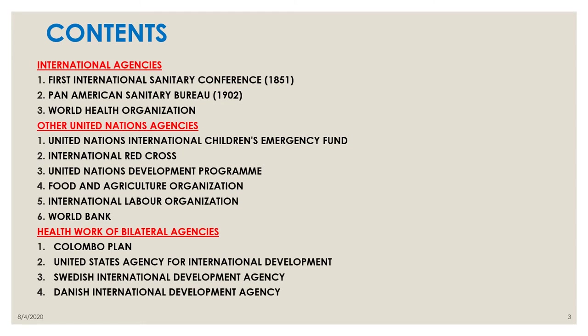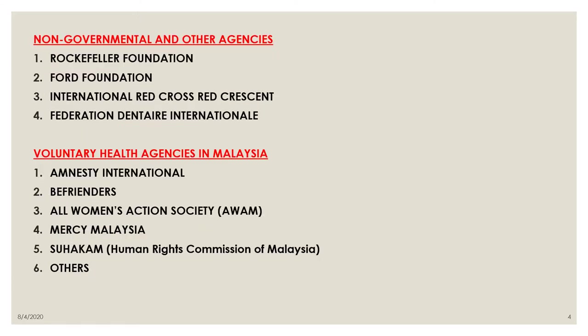The contents are under three headings: international agencies, other United Nations agencies, and health work of bilateral agencies. Bilateral means one country is helping another country — for example, Switzerland helping Malaysia. Non-governmental and other agencies like NGOs — non-governmental organizations — and voluntary health agencies. NGOs are actually included under voluntary agencies.